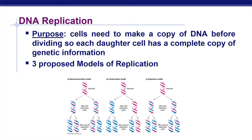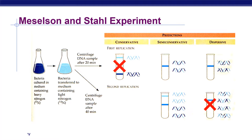Three proposed models of replication are: the semi-conservative model, the conservative model, and the dispersive model. The Meselson and Stahl experiment proved semi-conservative DNA replication in 1958. They conducted an experiment on E. coli, which divides in 20 minutes, to study the replication of DNA. The experiment involved N15 and N14, two isotopes of nitrogen, which can be distinguished based on their density by centrifugation in cesium chloride — N15 being heavy nitrogen and N14 being light nitrogen.